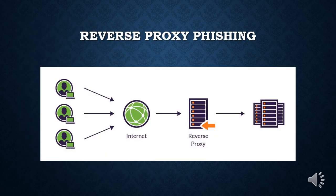The first method is called reverse proxy phishing. Reverse proxy phishing is a type of attack where cyber criminals act as intermediaries between the user and the web servers they are trying to access. This is how the attack works.